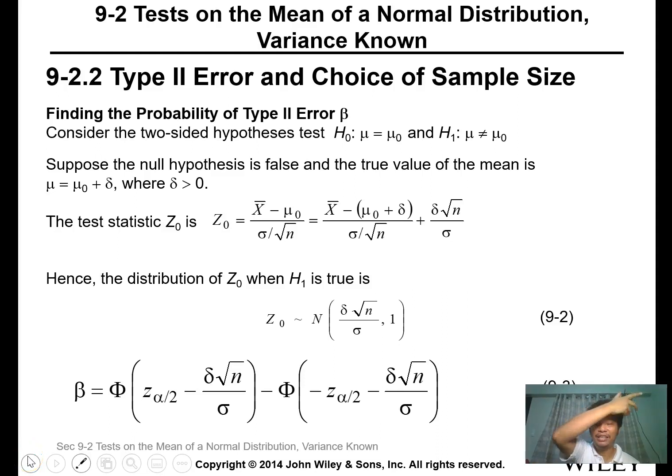Okay, welcome back. We'll continue with lesson 8, calculating the probability of type 2 error. For this one, you need to do the Z calculation for the Z test. So, you know that your H0 is mu equals mu naught and your H1 is mu is not equal to mu naught.